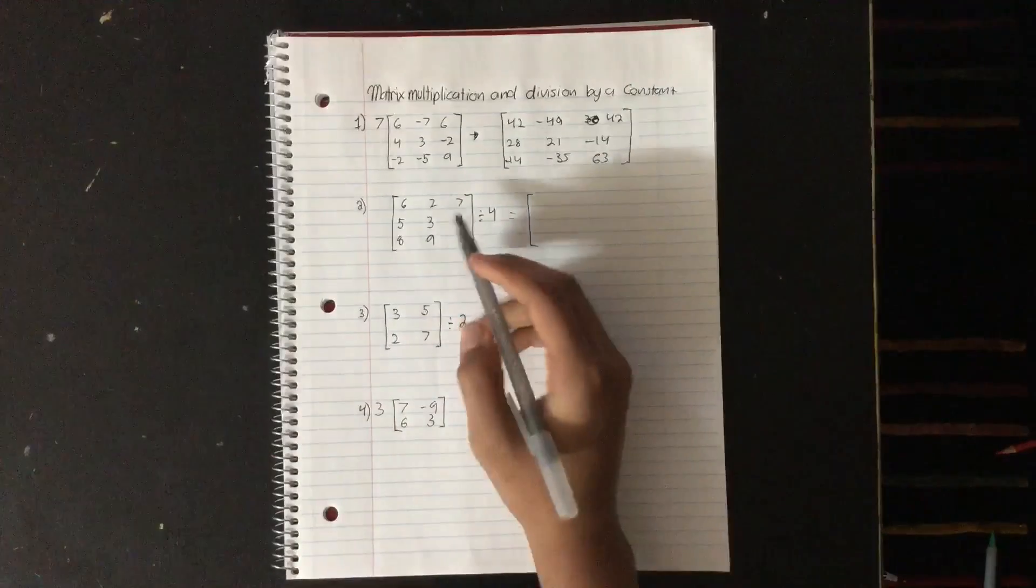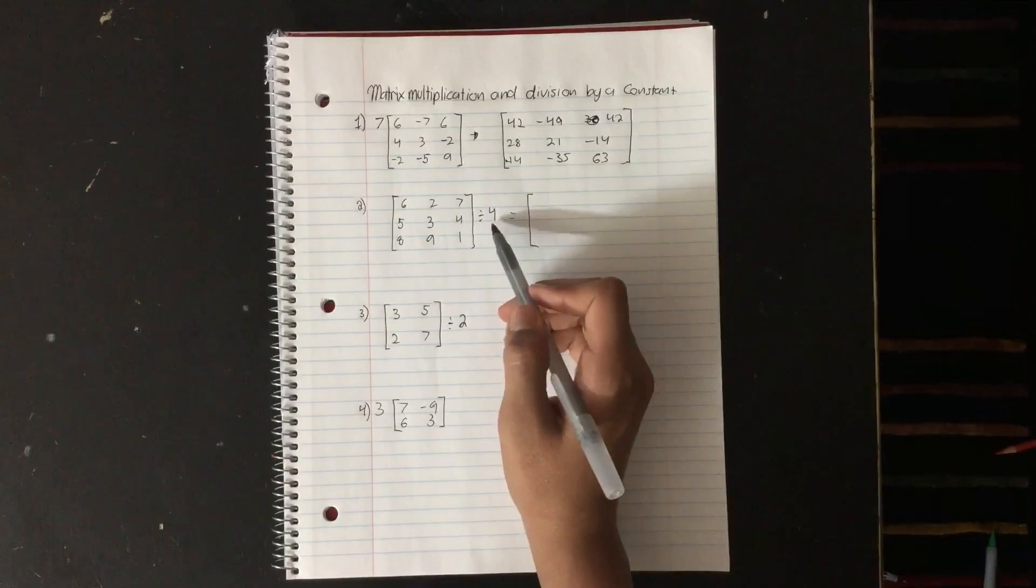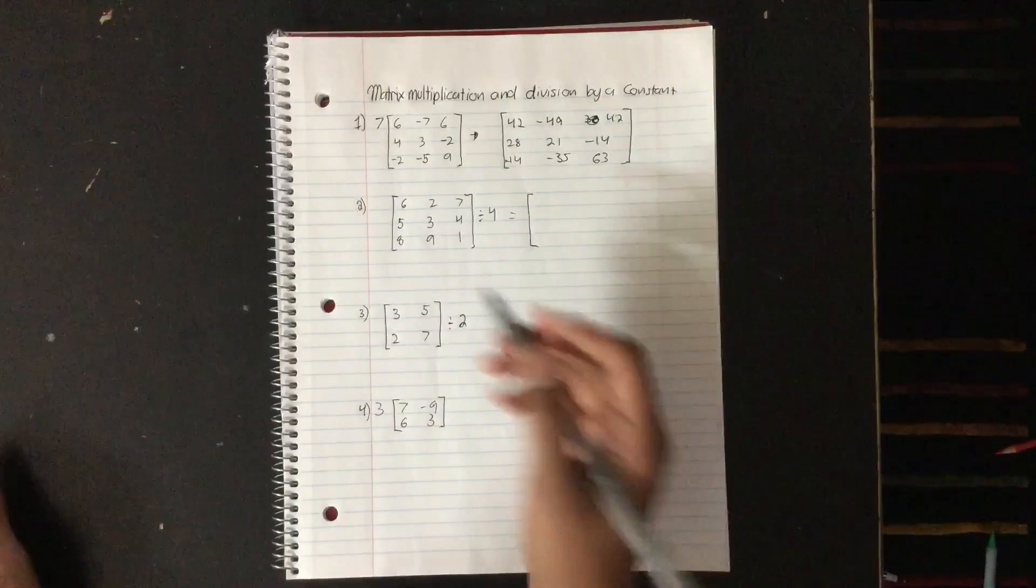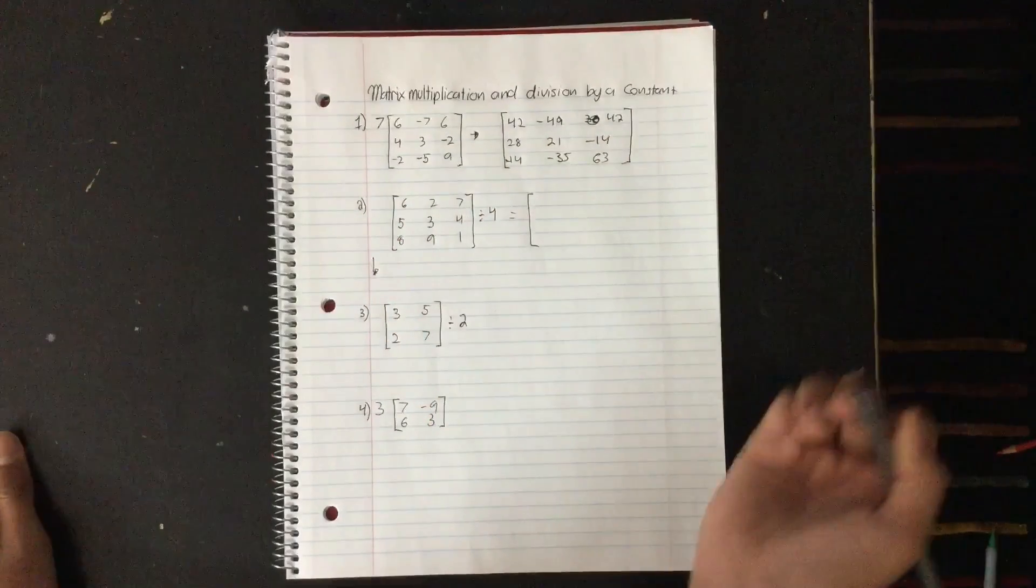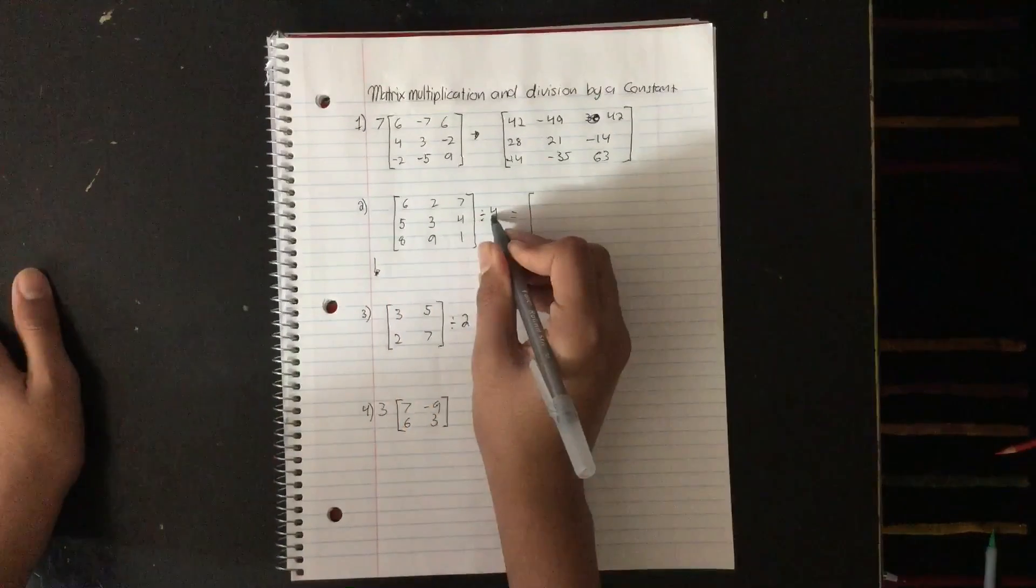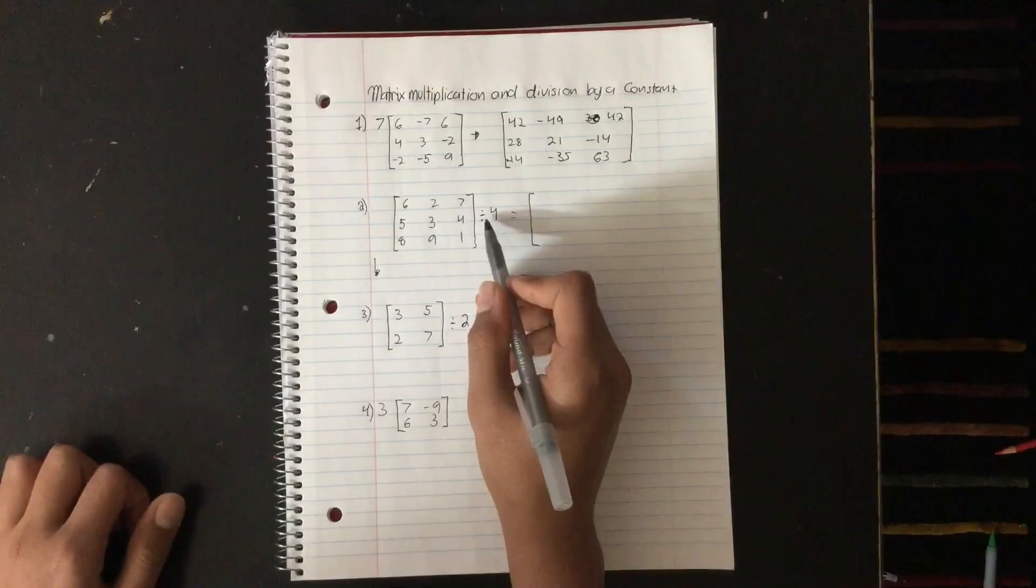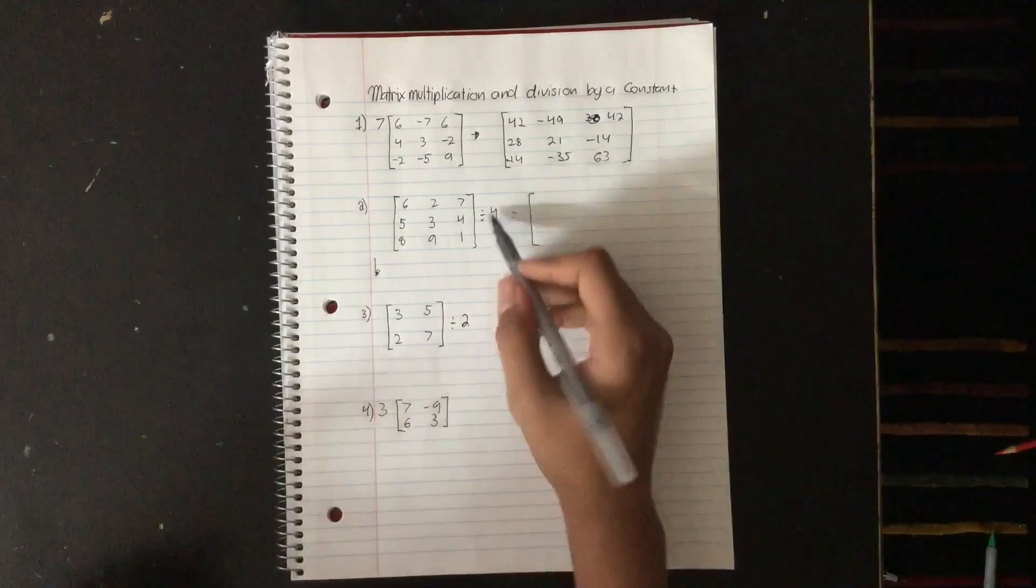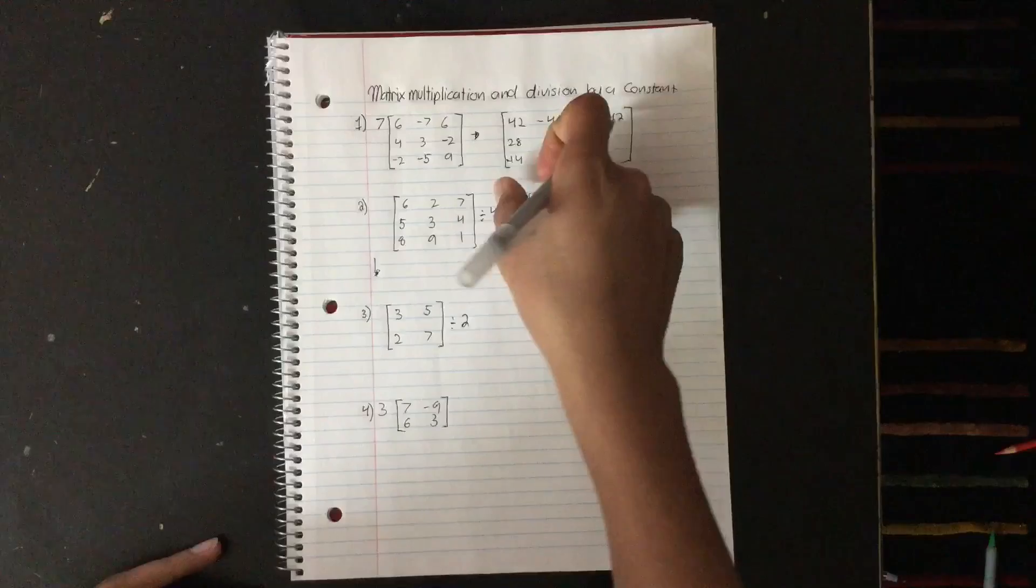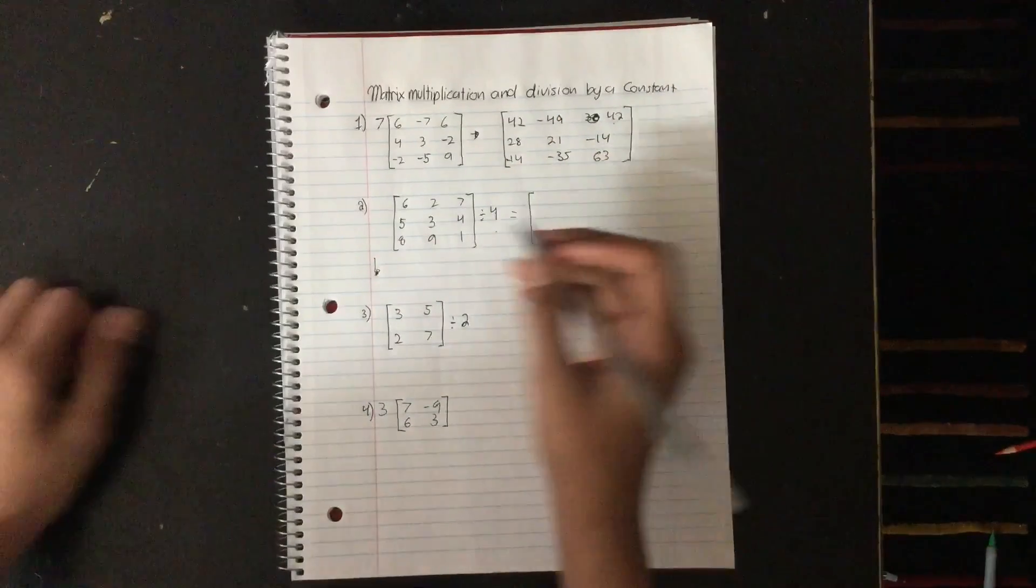So the next thing we have is this 3 by 3 matrix divided by 4. So the first thing I would actually recommend doing with this division is make it into a multiplication problem because they're just easier to understand. So basically, if we want to make this multiplication, you make this a multiplication sign, but you make sure that this goes into the denominator like I'll show you.